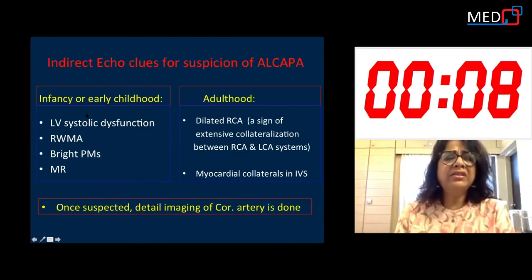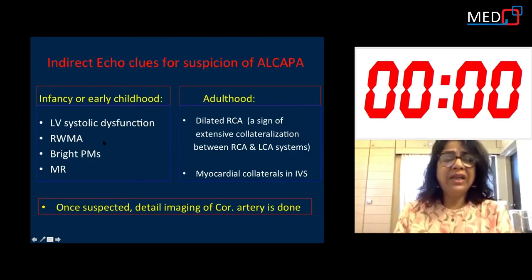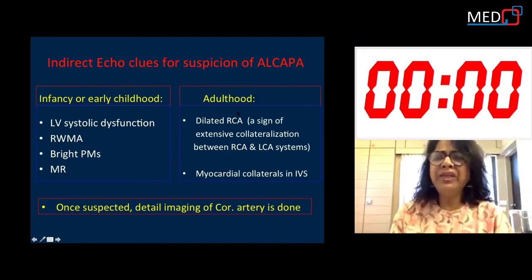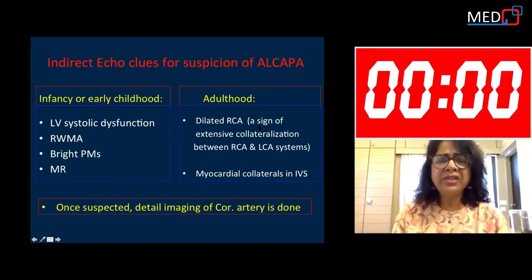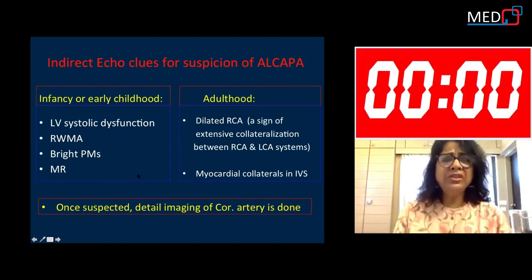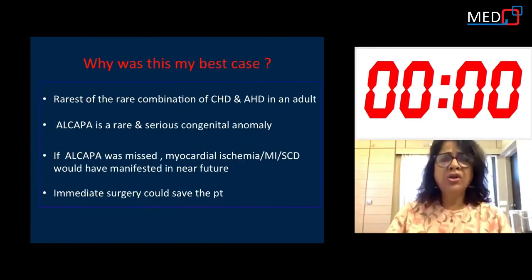Usually, patients with ALCAPA present in infancy or early childhood with congestive heart failure. On echo, indirect clues include LV systolic dysfunction, regional wall motion abnormality from LAD territory infarction, bright papillary muscles due to scarring, and mitral regurgitation. In adulthood, we get only a few signs: a dilated right coronary artery — as seen in this case — indicating extensive collateralization between the RCA and LCA systems, along with myocardial collaterals in the IVS. We had both these echocardiographic clues in this patient. Once we suspect these indirect signs, we should immediately proceed to detailed coronary artery imaging to confirm the diagnosis.